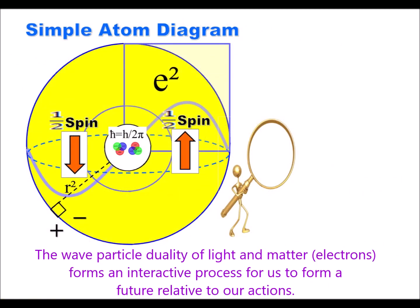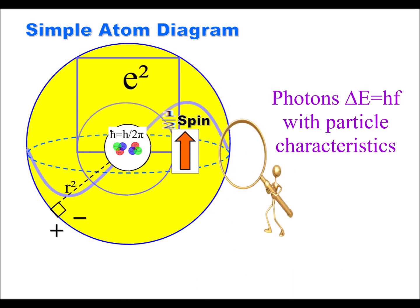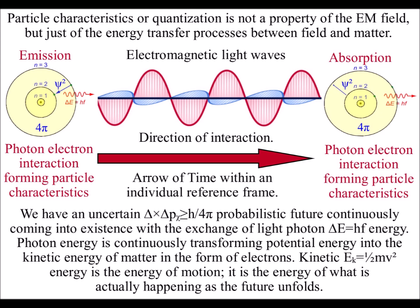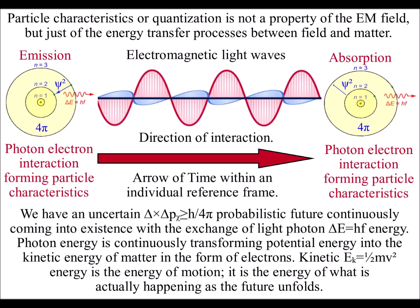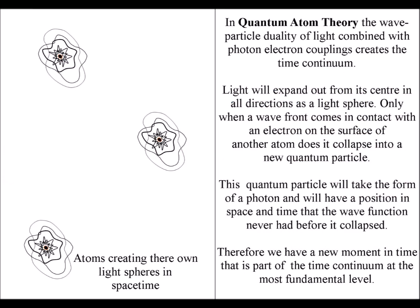The spherical symmetry creates the particle characteristics of light, with photons continuously transforming potential energy into kinetic energy of what is actually happening as the future unfolds.